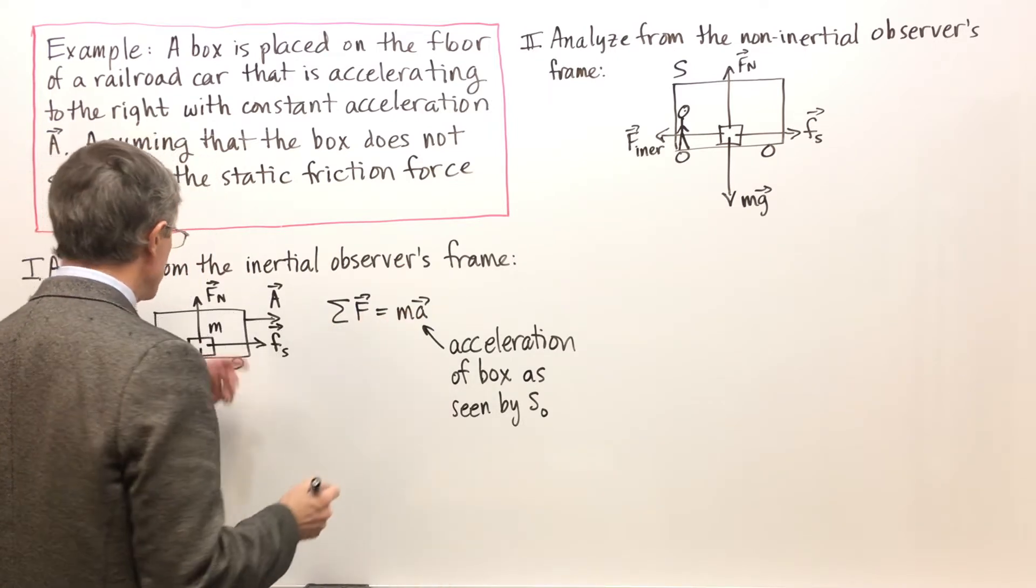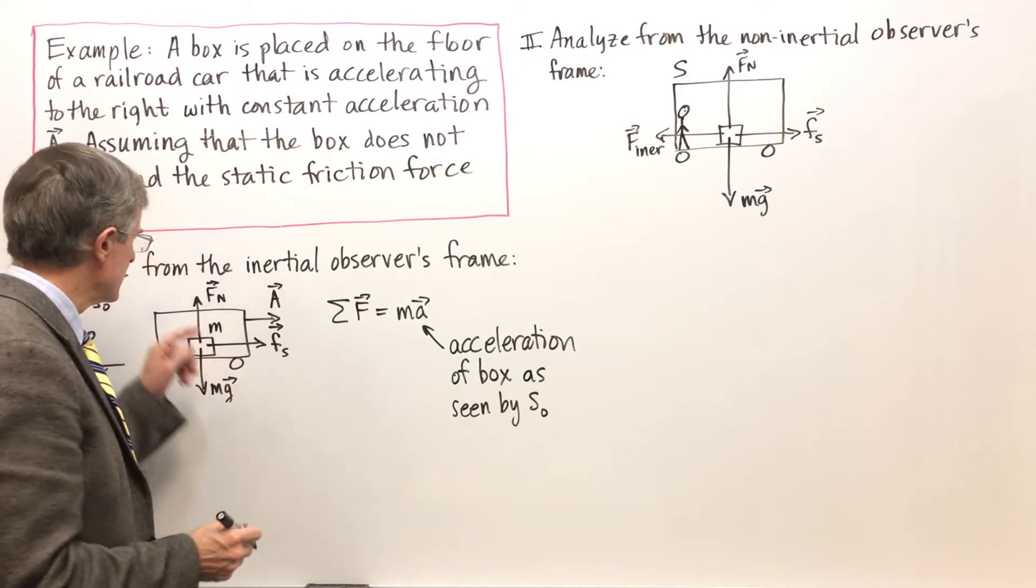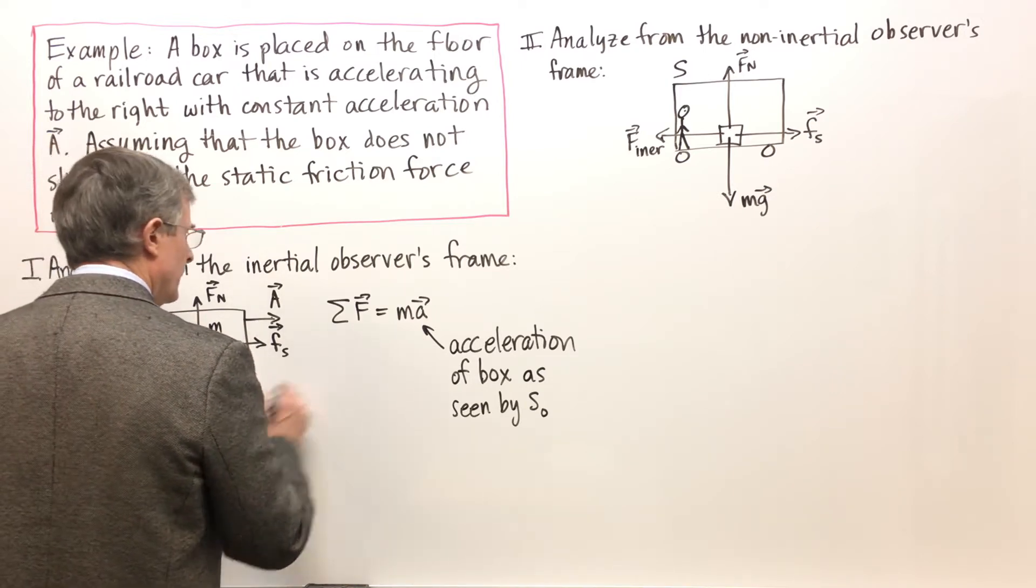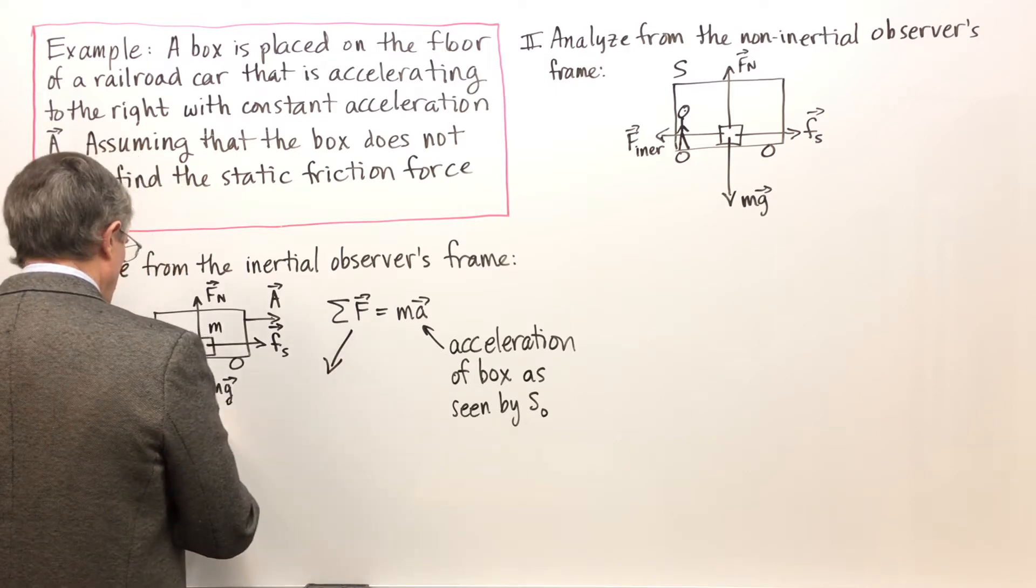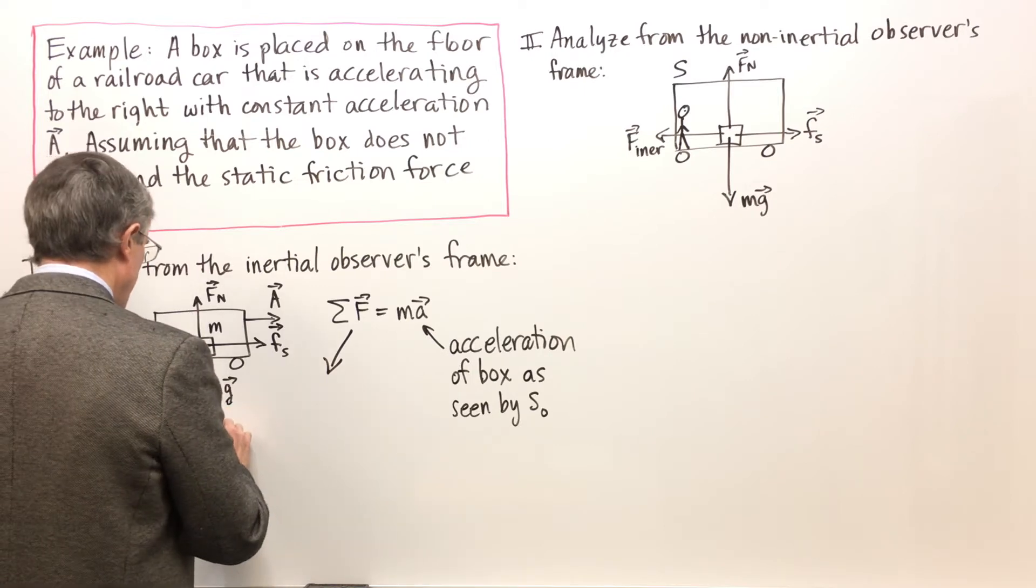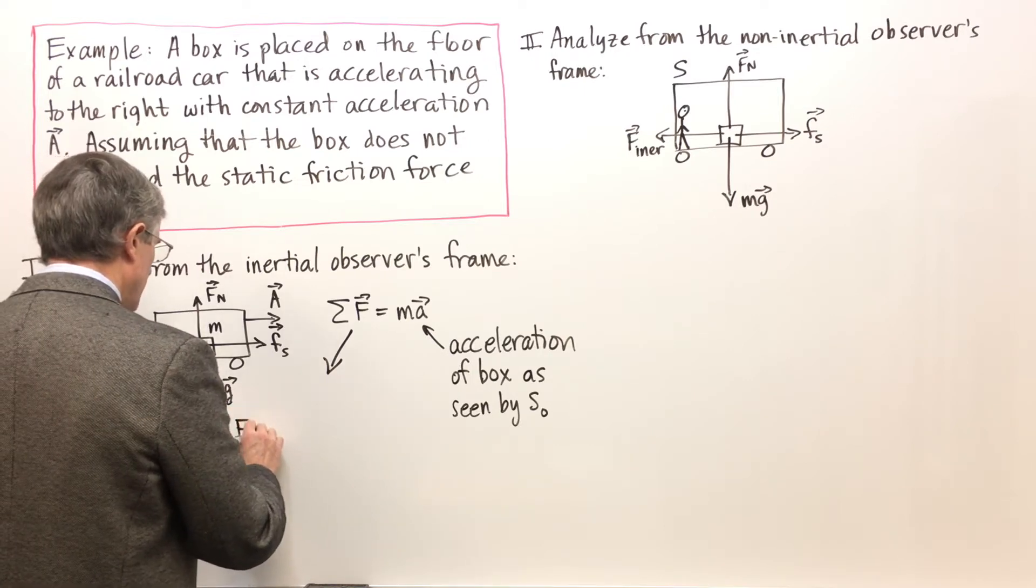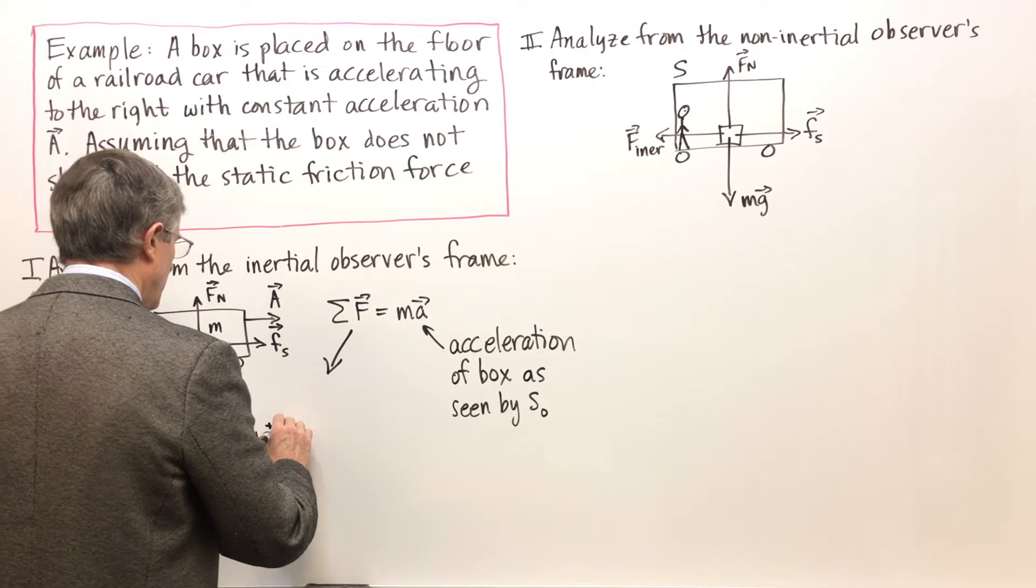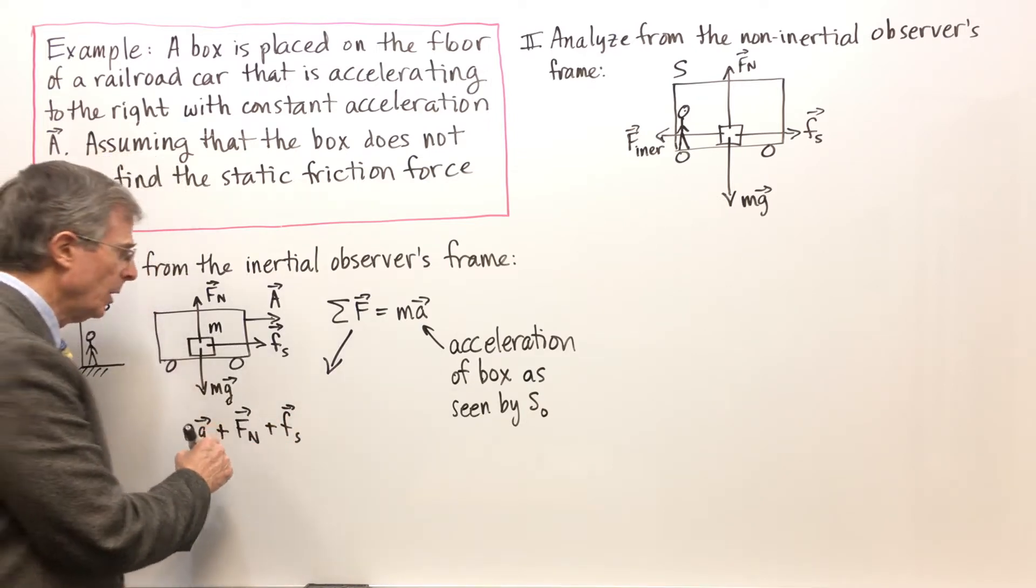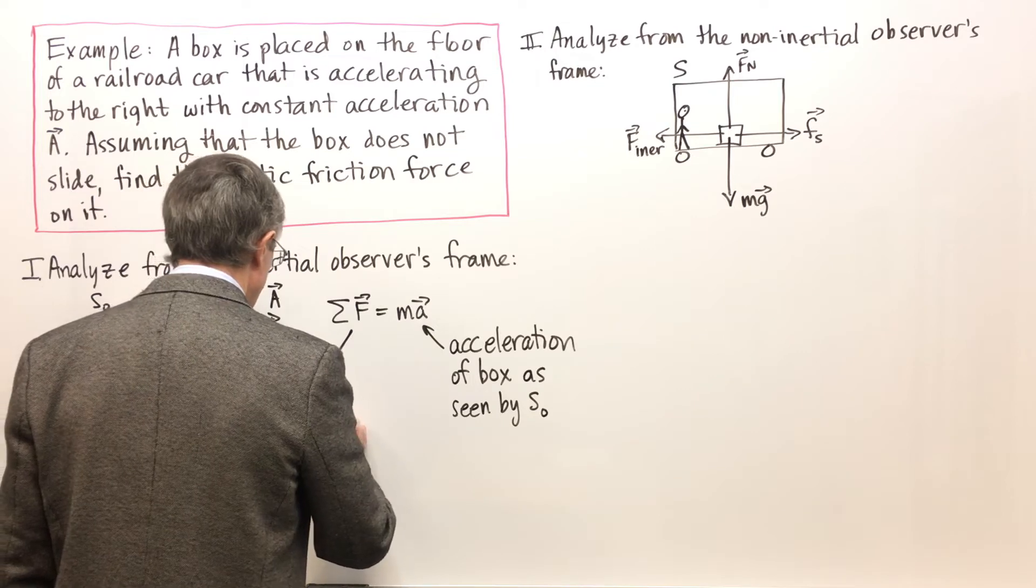The sum of the forces - we have three forces: one, two, three. So this equation gives me Mg vector - it's a vector equation - plus the normal force plus f_s. That's a vector sum. Adding them all up equals the mass times acceleration.